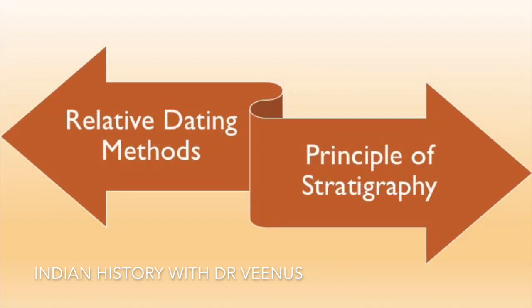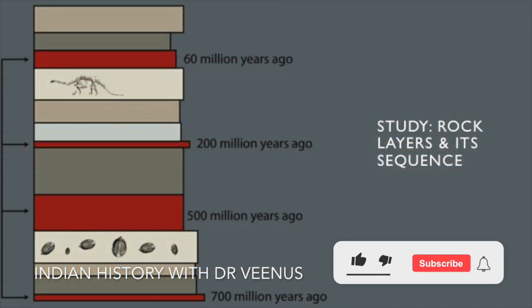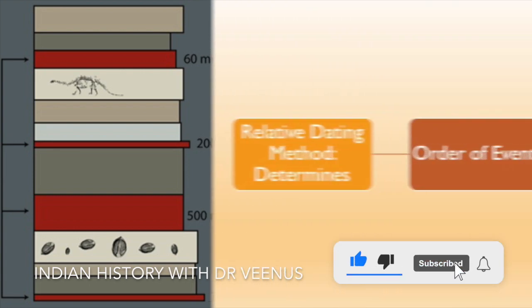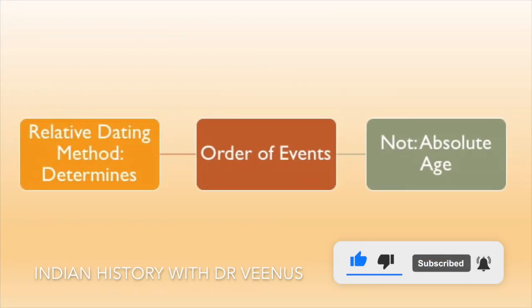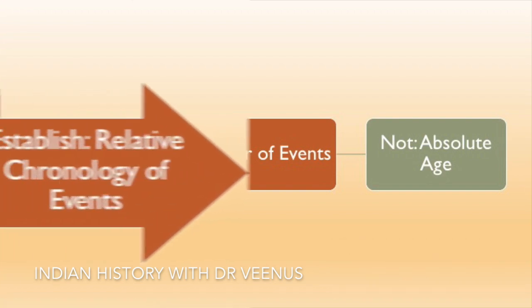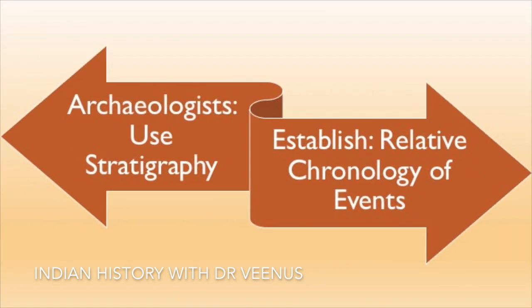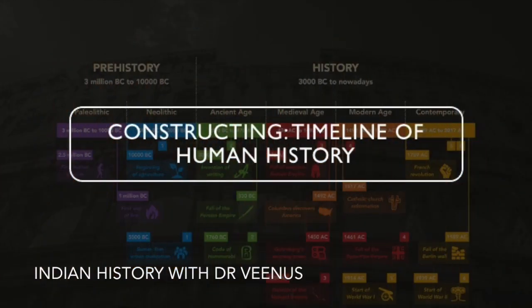Relative dating methods are based on the principle of stratigraphy, which is the study of rock layers and their sequence. This dating method determines the order of events but not their absolute age. Archaeologists use stratigraphy to establish a relative chronology of events, which is essential to constructing a timeline of human history.